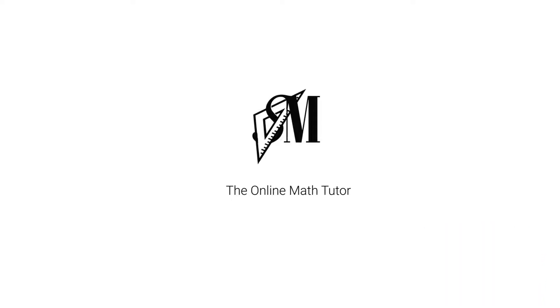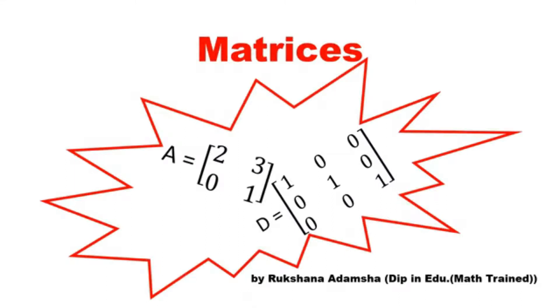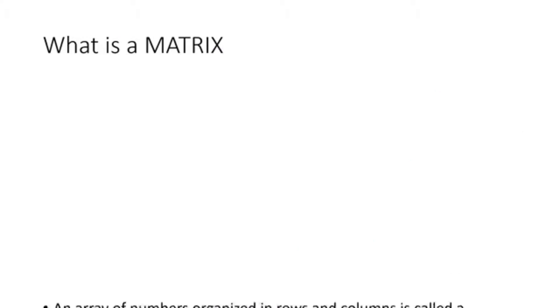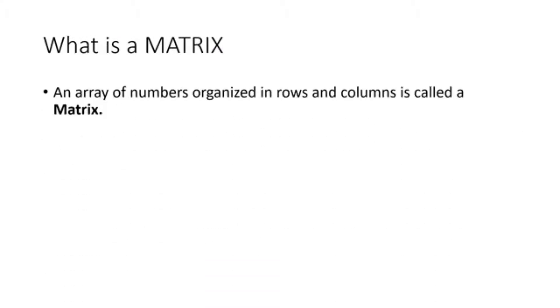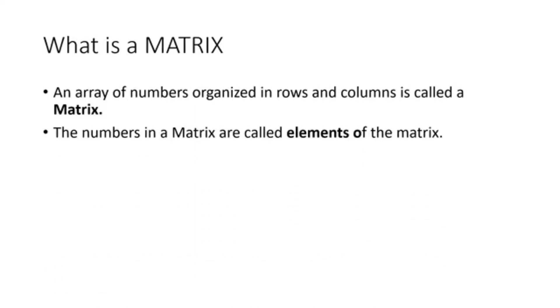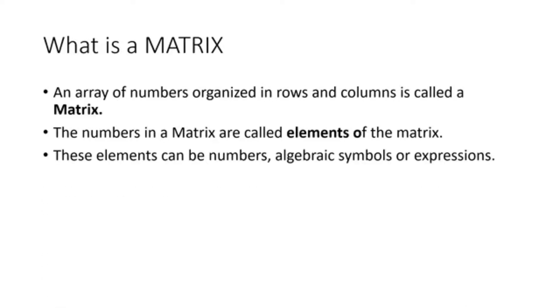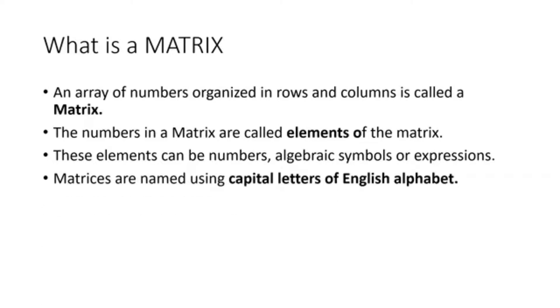Hi everyone, welcome to Smart Math Online Tutor. Through this video I'm going to tell you about matrices. A matrix is an array of numbers organized in rows and columns. The numbers in a matrix are called elements of a matrix, and these elements can be either numbers, algebraic symbols, or even expressions.